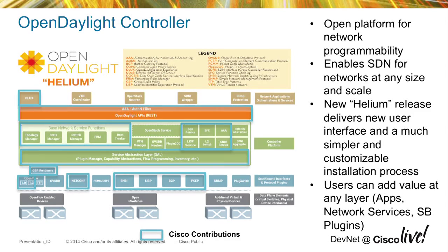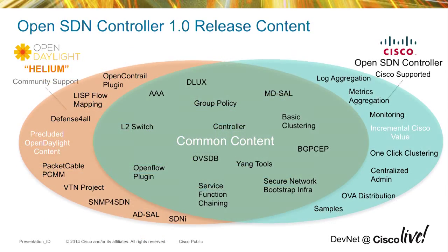This is the structure of the OpenDaylight controller in the Helium release. The main reason I'm showing this is to show the level of Cisco contribution - large chunks have been written by Cisco and our partners, including a lot of the base functionality and the different southbounds. The key thing is you can really add value wherever you want: you can write code to add to the controller or write apps that sit on top. In the beginning OpenDaylight had the AD-SAL (application-driven SAL), and everything's moving to the new model-driven SAL, which I'll come onto.